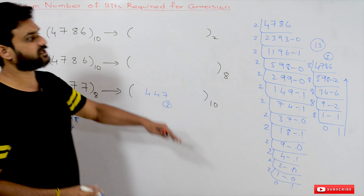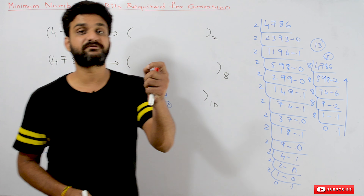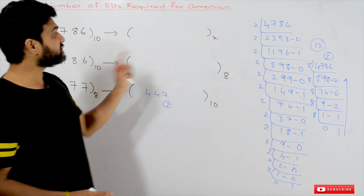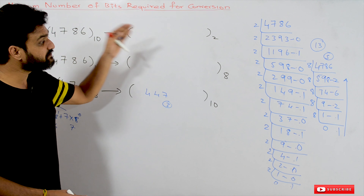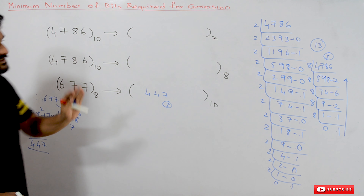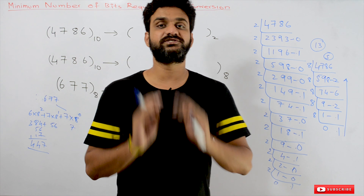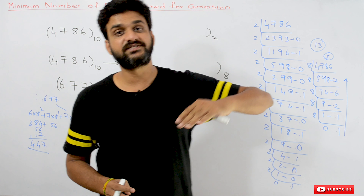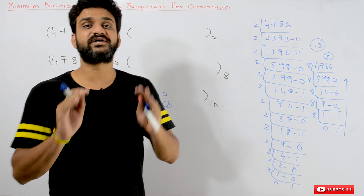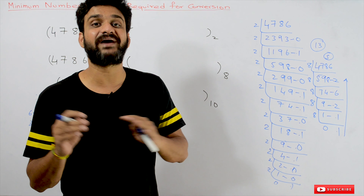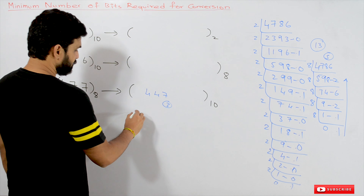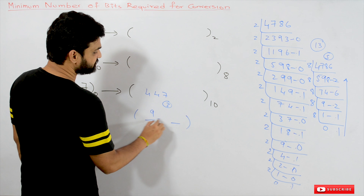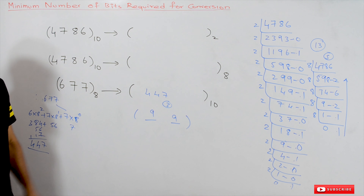We have to do all these calculations, but for a one-mark question in an exam, spending this much time is not efficient. So there is a logic behind this conversion. For example, if you are given a two-digit number in any number system — let's consider the decimal number system — what is the maximum number possible with two digits?